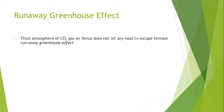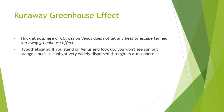The runaway greenhouse effect is often formulated with water vapours and carbon dioxide that reach the stratosphere of the planet and escape into space via hydrodynamic escape, resulting in a desiccated planet. This may have happened in the early history of Venus, as researchers have explained.